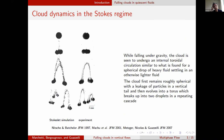To give an overview of what has been done before: there has been a lot of work on cloud dynamics in quiescent fluid — first in the Stokes regime. If you think about the cloud here, you have a cloud of particles — on the right is an experiment, on the left is a simulation. While it's falling under gravity, the cloud undergoes an internal toroidal circulation, very similar to the Hadamard circulation found for a spherical drop of heavy fluid settling in a lighter thread. The cloud first remains roughly spherical, has a leakage of particles in the tail, then evolves into a torus, and then breaks into different clouds in a repeating cascade.